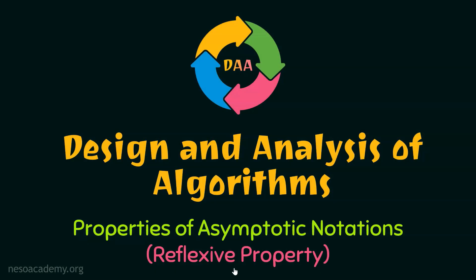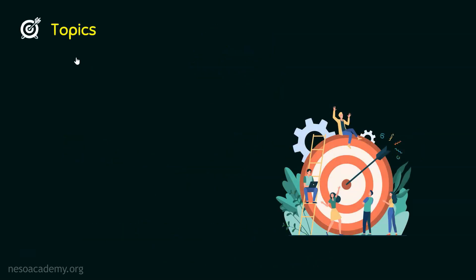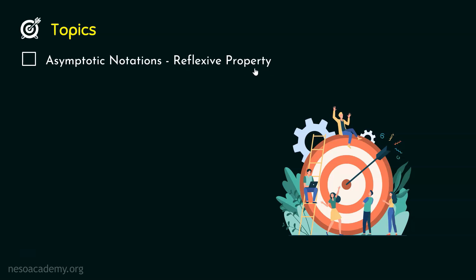In the last presentation, we discussed the general property of asymptotic notations. Now, we will discuss the reflexive property. The topic of this lecture is asymptotic notations reflexive property. We will discuss the reflexive property of asymptotic notations in this lecture. Let's first understand what the reflexive property is and through an example, we will understand how the reflexive property is satisfied.